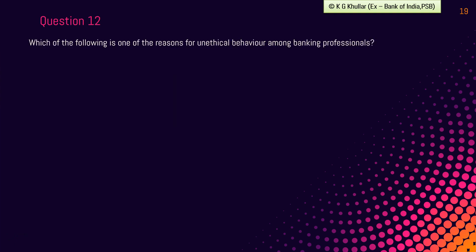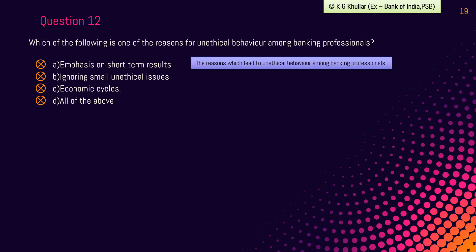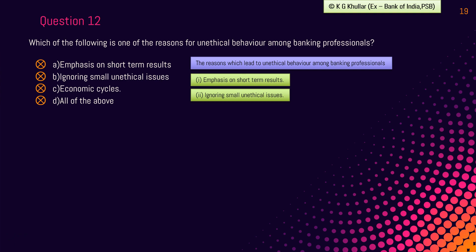Next question: which of the following is one of the reasons for unethical behaviour among banking professionals? Option A: emphasis on short-term results. Option B: ignoring small unethical issues. Option C: economic cycles. Option D: all of the above. The first reason is emphasis on short-term results — this is one of the primary reasons which led to the downfall of companies like Enron and WorldCom. Second is ignoring small ethical issues — most compromises we make are small, but they lead us to commit large mistakes, and ignoring minor lapses often leads to bigger and more serious mistakes.